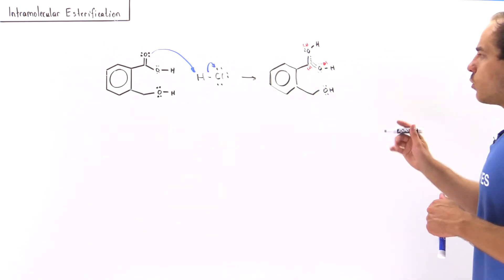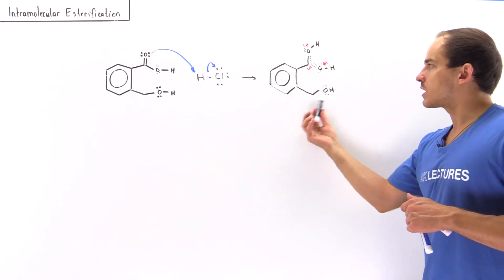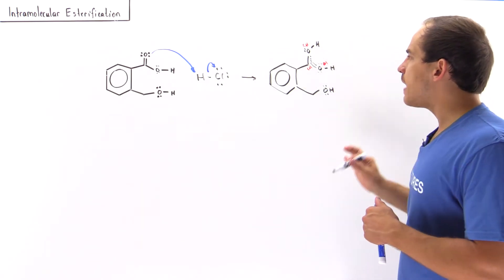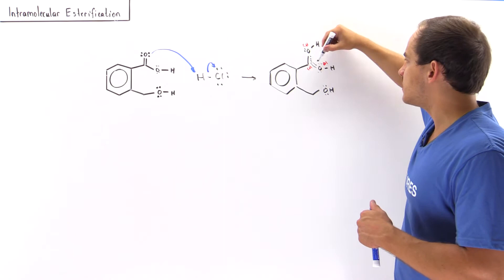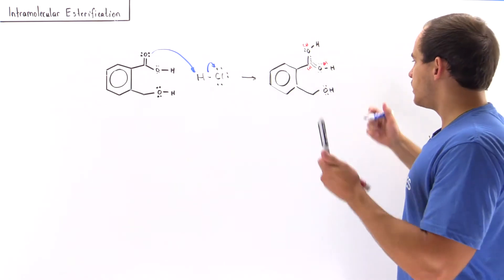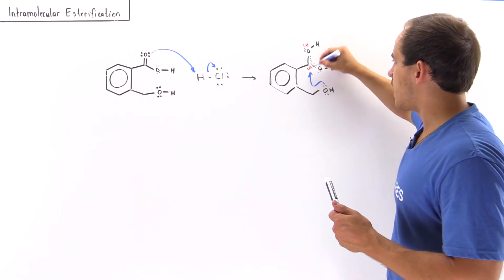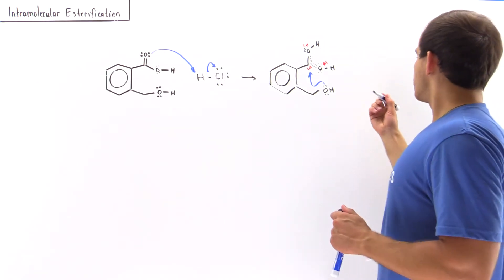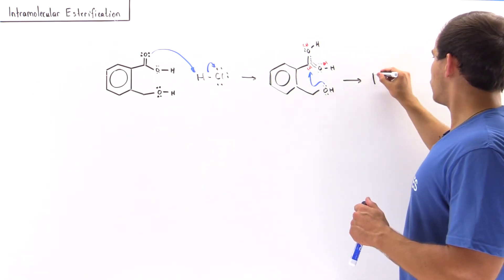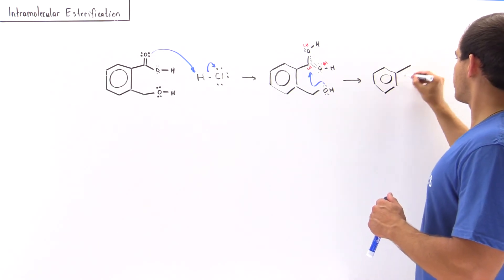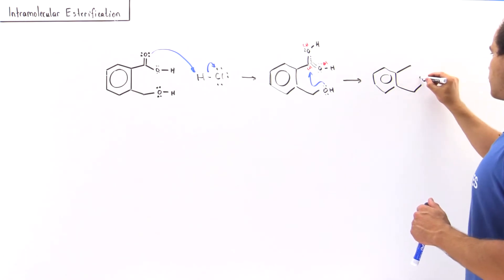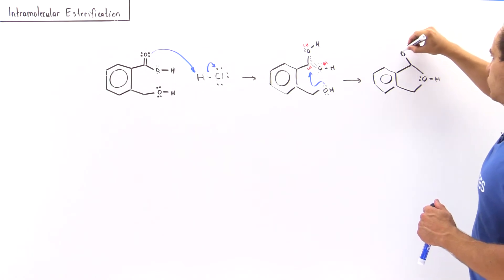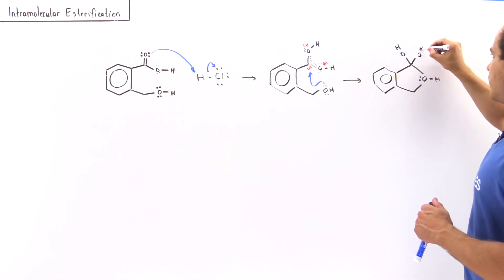In the next step, the alcohol part of this molecule is close enough to the carbonyl carbon to form a five-membered ring — a bond between this oxygen and this carbon. So the alcohol oxygen acts as a nucleophile, attacking this carbon and placing the two electrons onto the carbonyl oxygen. The intermediate formed has a new bond, one hydroxy group, and a second hydroxy group.